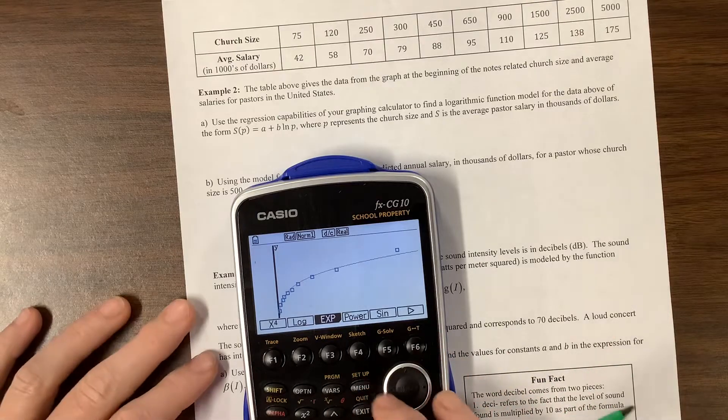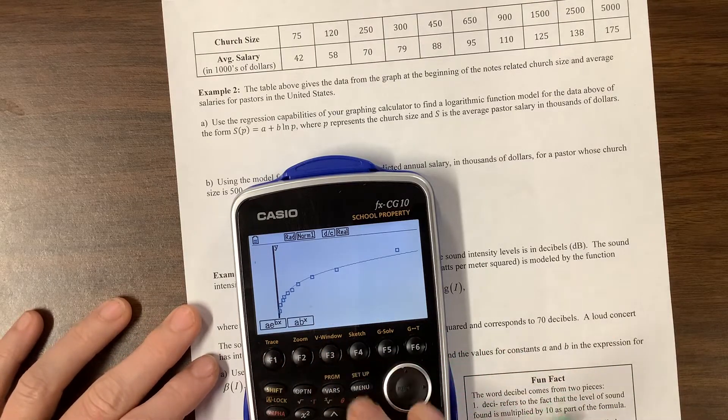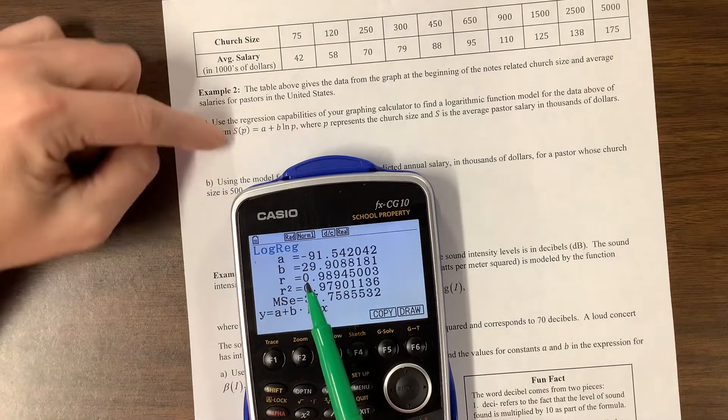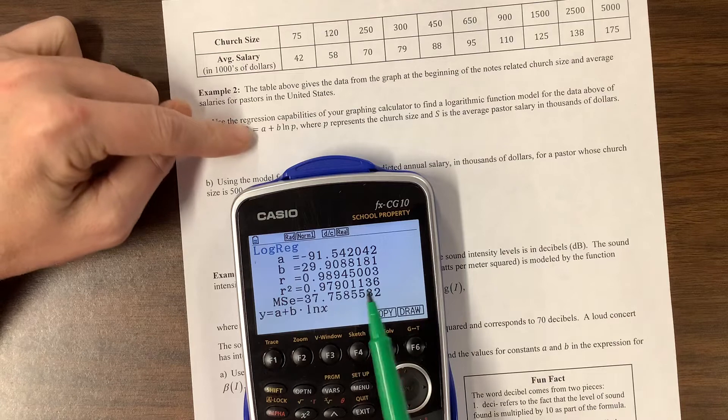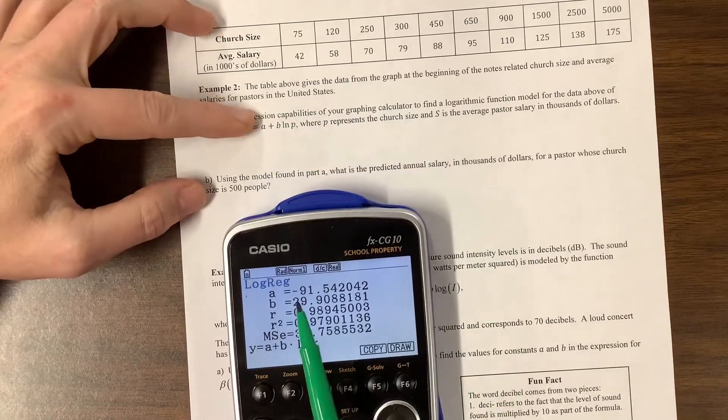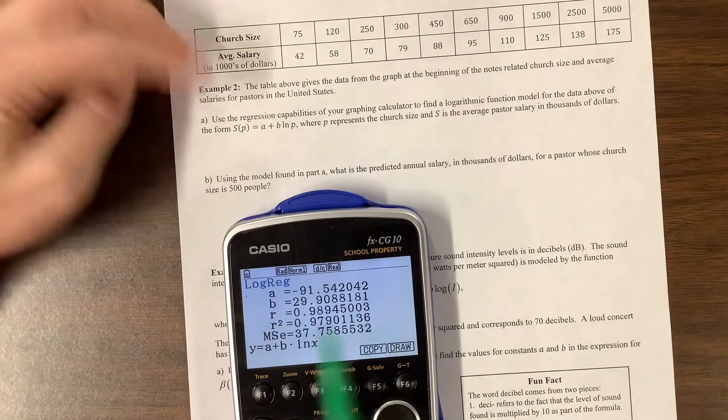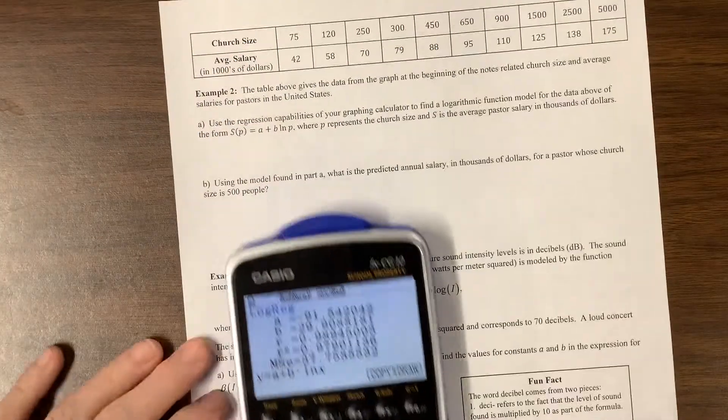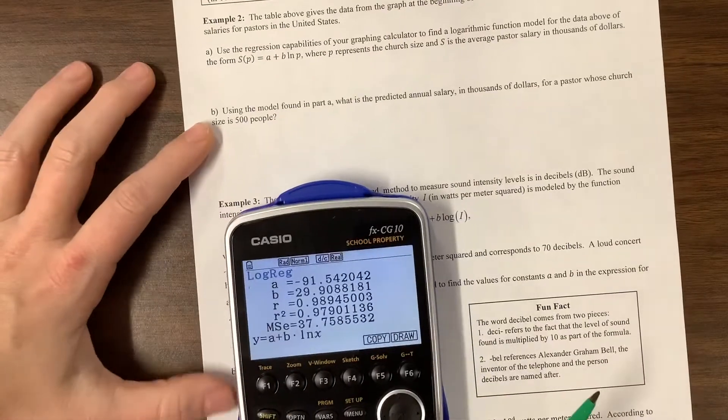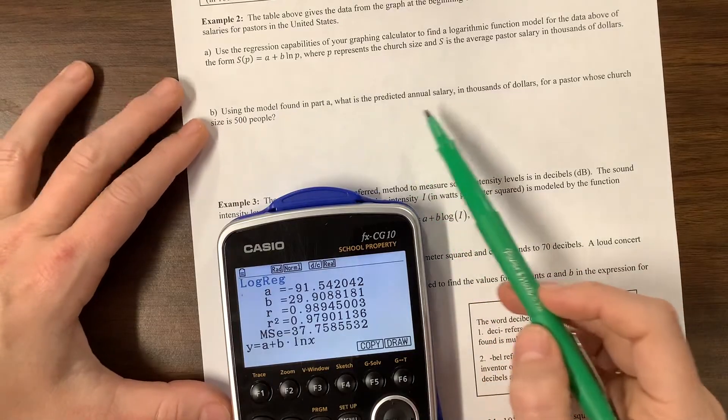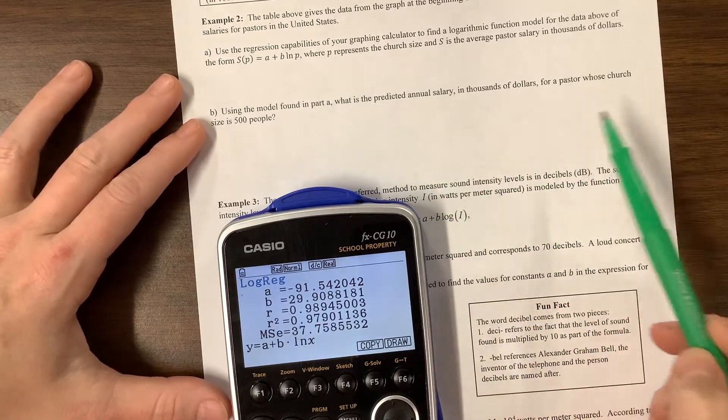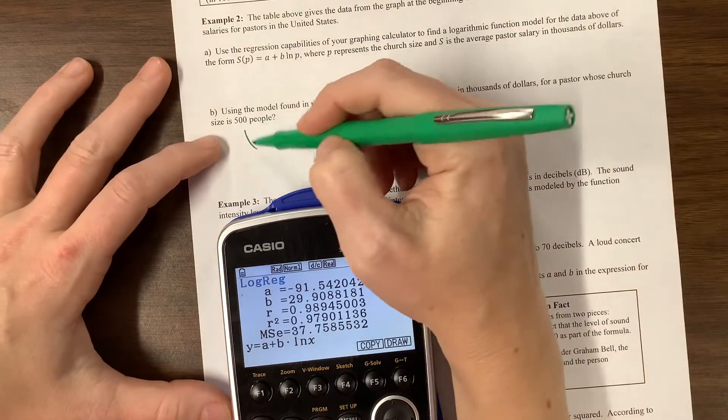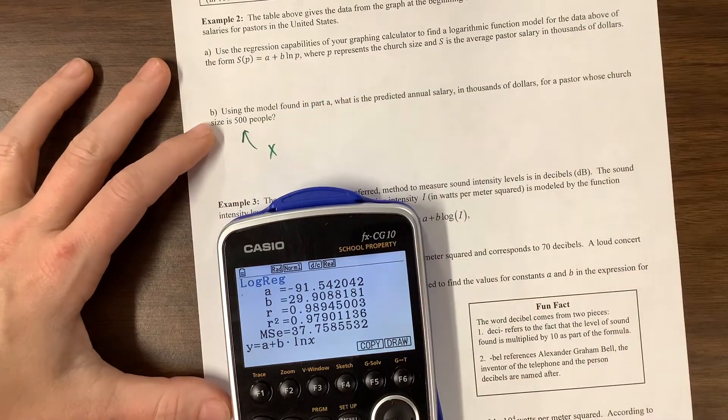So looks like it modeled it relatively well. I forgot to write none of my numbers. Well, oops. And then I hit the wrong one. You know what? I don't need to write it down. But the a value is this negative 91 point whatever. And then the b value is 29 point whatever. There you go. Now it says, using the model found in part a, what is the predicted annual salary in thousands of dollars from a pastor whose church size is 500 people? So 500 people is going to be the x value, and we're looking for y.